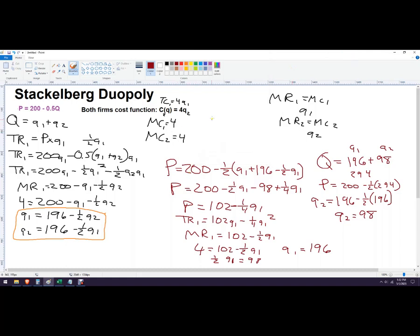So we've solved this whole thing. So price is 53, big quantity, 294, Q1, 196, Q2, 98. That's our answer.